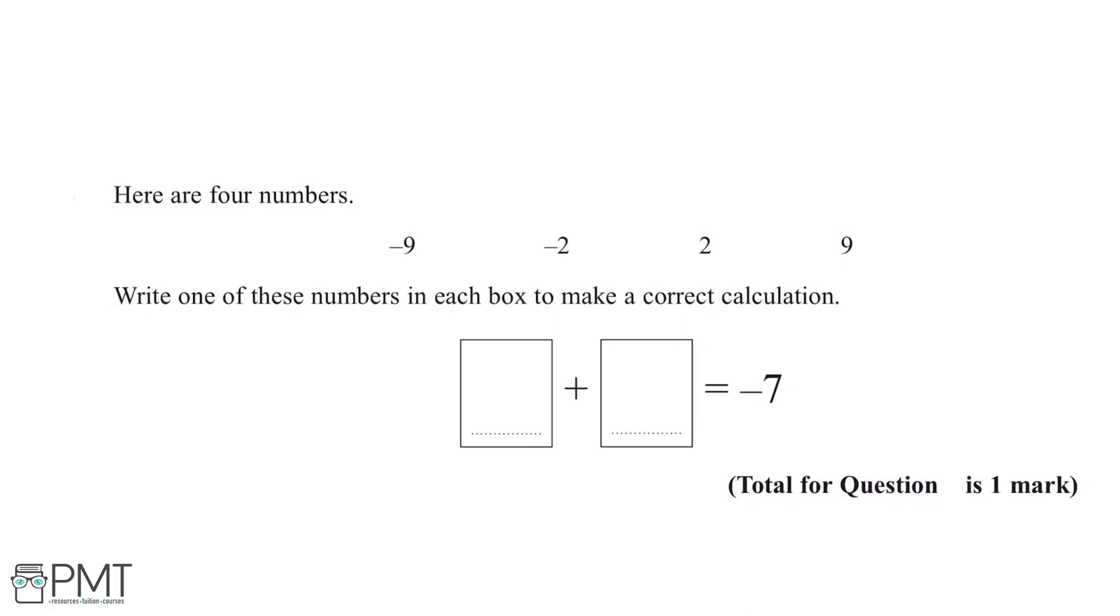Here are four numbers: minus nine, minus two, two, and nine. Write one of these numbers in each box to make a correct calculation.